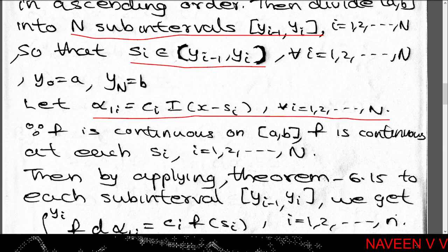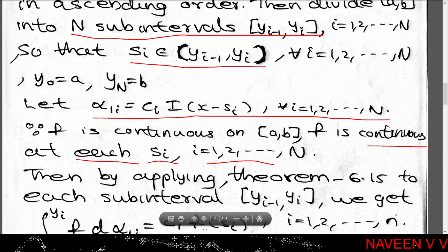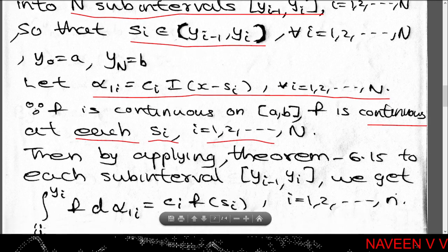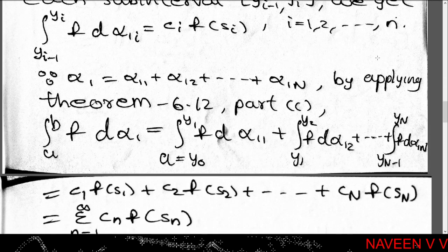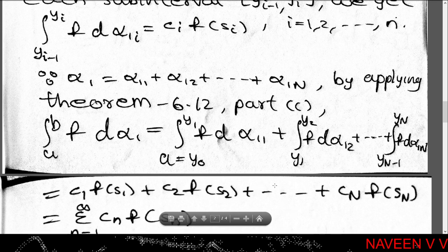Then over [yᵢ], α₁ᵢ = cᵢ · I(x - sᵢ) for all i = 1, 2, ..., N. Since f is continuous on [a,b], f is continuous at each point sᵢ. Applying the result from the previous theorem on each subinterval, ∫(y_{i-1} to yᵢ) f dα₁ᵢ = cᵢ · f(sᵢ) for all i = 1, 2, ..., N.